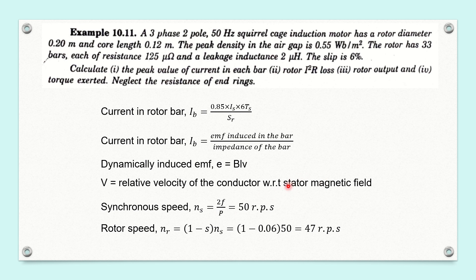Let us calculate the velocity of the stator magnetic field. We calculate the rotational speed in RPS. We know the stator magnetic field revolves at synchronous speed, and synchronous speed is 2F/P in RPS. Frequency is 50 Hz and number of poles is 2, so it will be 2 × 50 ÷ 2, which is 50 RPS. This is the revolution speed of the stator magnetic field.